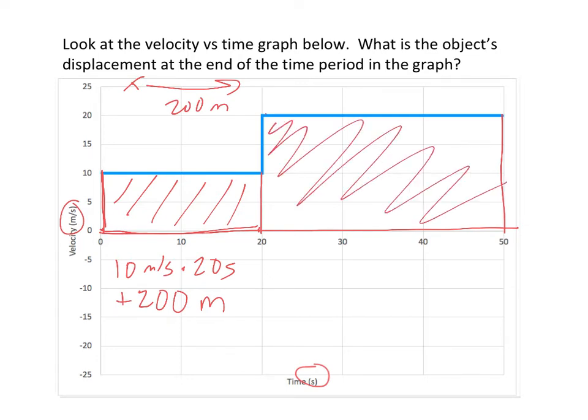So this has a height of 20 meters per second, and a length of from 20 to 50 is 30 seconds. So don't make the mistake of going all the way to 50. So what is 20 meters per second times 30 seconds? It is positive 600 meters.